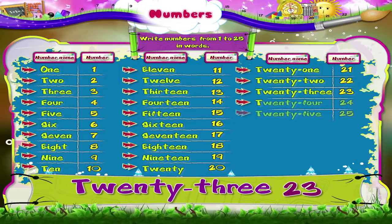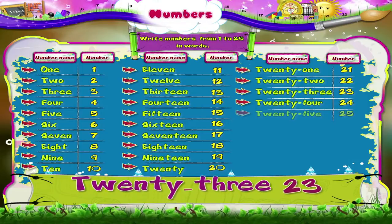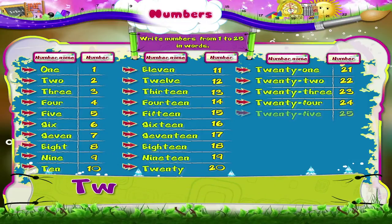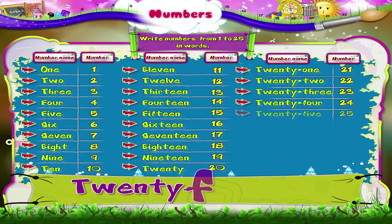T-W-E-N-T-Y 20, F-O-U-R 4 — 24. T-W-E-N-T-Y 20, F-O-U-R 4 — 24. T-W-E-N-T-Y 20, F-O-U-R 4 — 24.